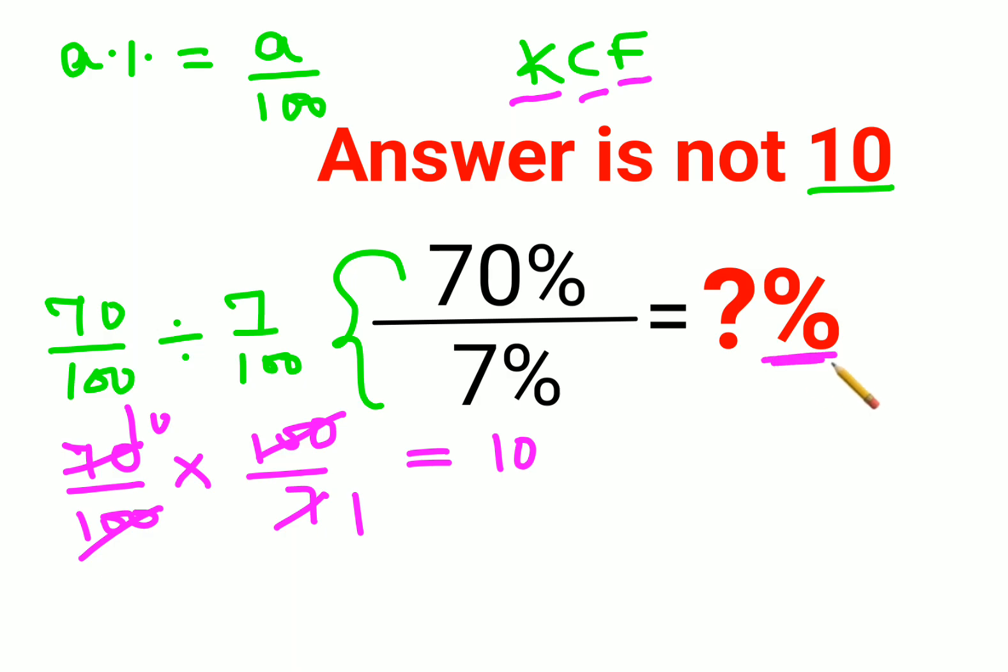But here they have asked us to find the value in terms of percent. Now when you want to convert a percent into a number, you divide it by 100. So if you want to convert a number into percent, you need to multiply by 100. So your final answer would be 10 into 100 which is 1000 percent.